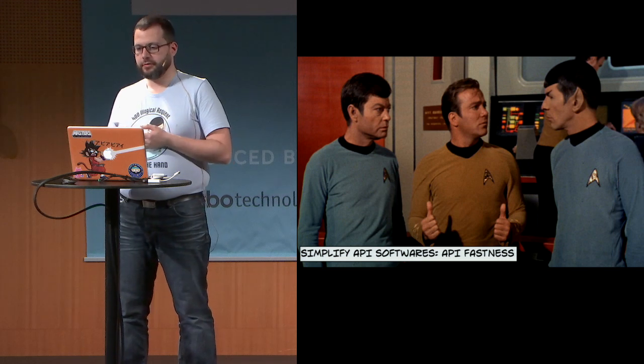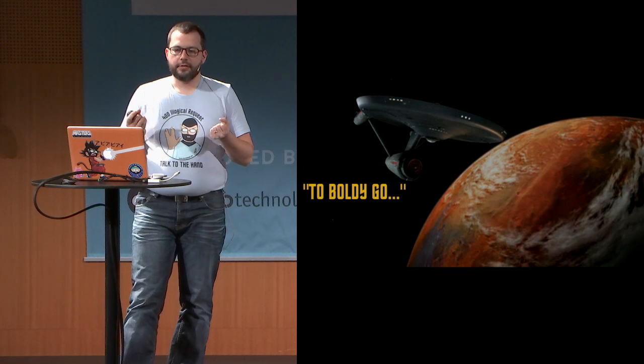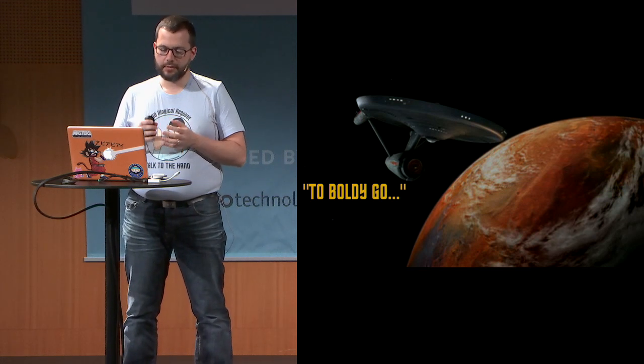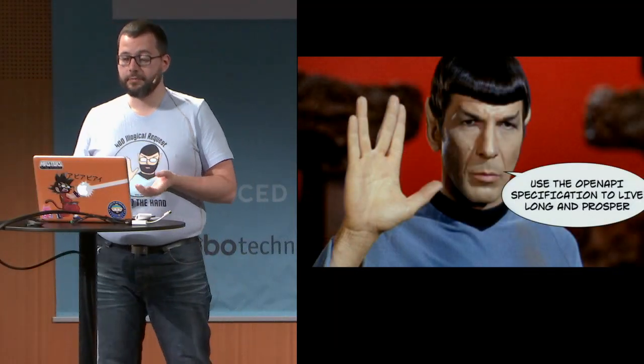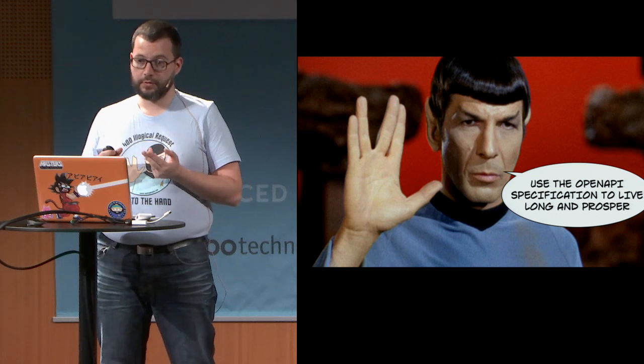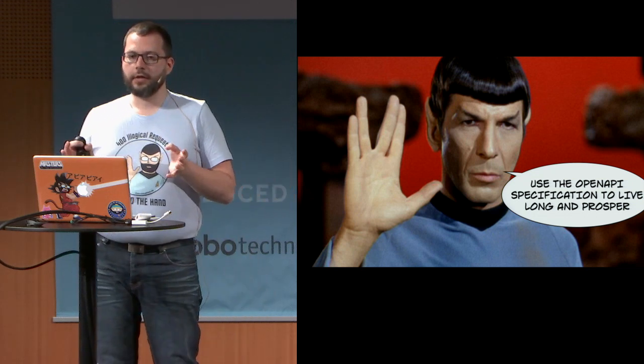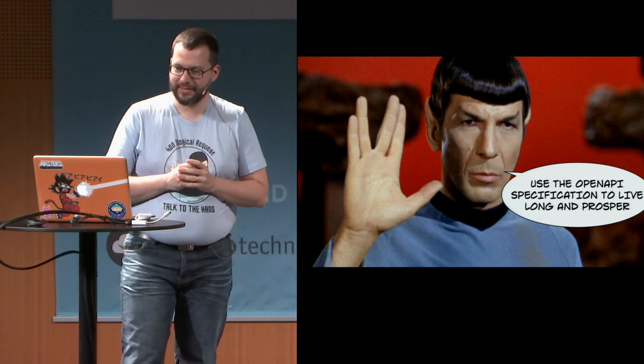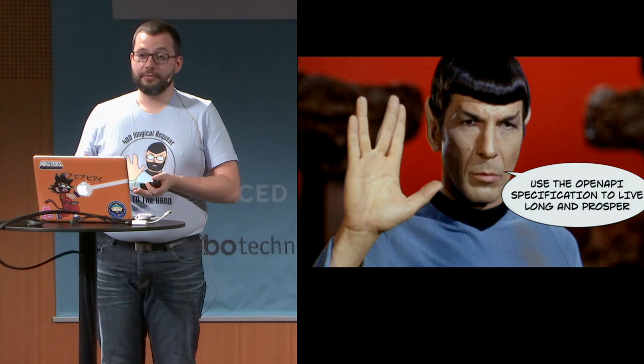By simplifying the use of API software, the OpenAPI specification helps us achieve API fastness. Design, documentation, code generation, security governance, deployment tools — the OpenAPI specification can be used in almost every aspect of the API universe to accelerate and secure API creation and evolution. So if you design, test, or develop APIs, use the OpenAPI specification — it will make your life easier. If you provide APIs or lead API programs, promote the use of the OpenAPI specification. And if you are an API tooling editor, extensively use the OpenAPI specification — your millions of future customers will thank you. Use the OpenAPI specification to live long and prosper. Thank you.